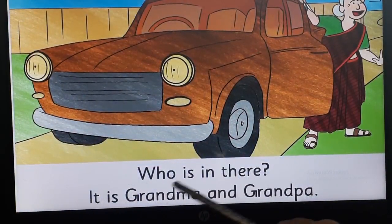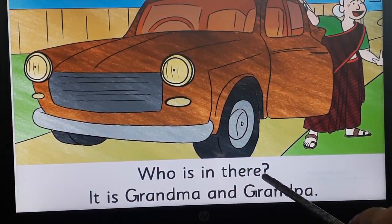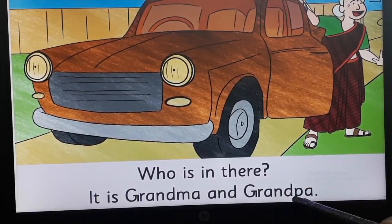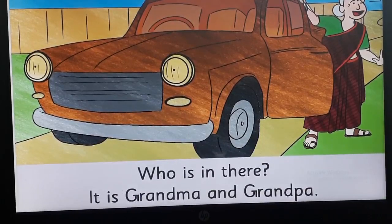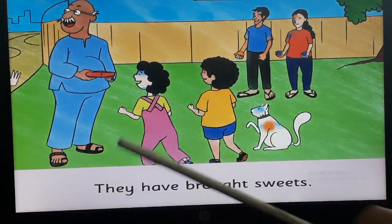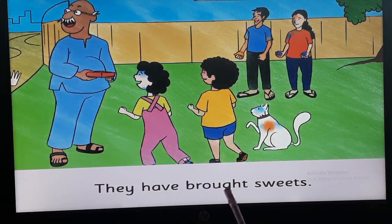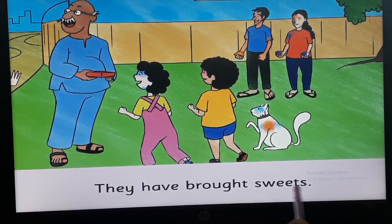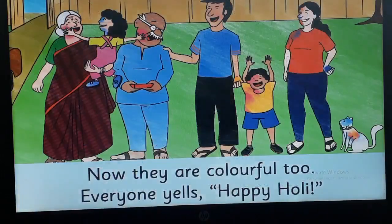Who is there? Who is in the car? It is — can you read this? — It is grandma and grandpa. Let's move on to the next page, the right hand side page. They have brought — complete the sentence using this word — yes, sweets. They have brought sweets. Now let's turn the page.